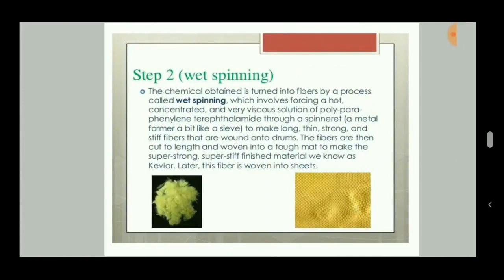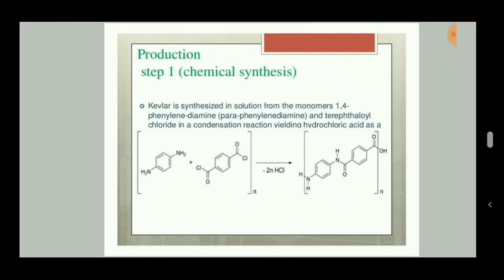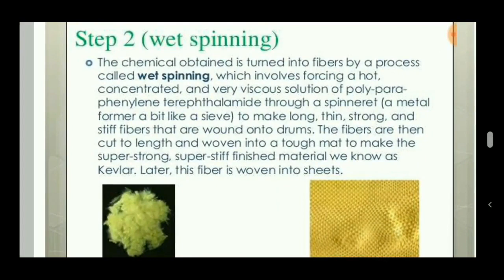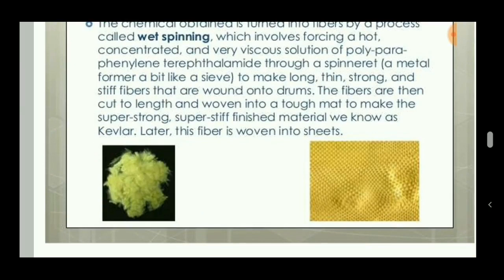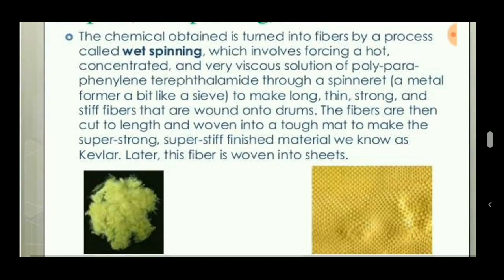Kevlar can also be prepared by the physical method of wet spinning. The first step is chemical synthesis — the synthesis of the compound, which is the raw material for the production of Kevlar fiber. Then comes wet spinning, where this chemical compound is turned into fibers. The raw material is placed in a device called a spinneret, from which long, thin, strong fibers can be obtained.